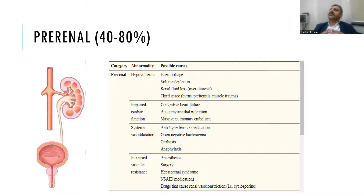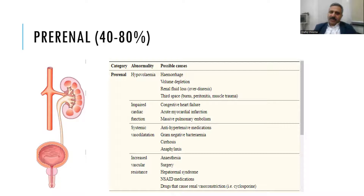Let's talk about pre-renal azotemia — the most common cause of AKI, accounting for almost 70–80% of cases due to renal hypoperfusion. Anything that leads to decreased perfusion and blood supply to the kidney can cause pre-renal azotemia. For example, hypovolemia secondary to hemorrhage, volume depletion, gastroenteritis, fluid loss, diuretics, third spacing, or burns — anything causing hypotension or hypovolemia — can lead to renal hypoperfusion and pre-renal azotemia.